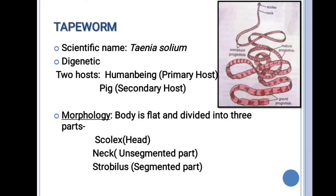The scientific name of the tapeworm is Taenia solium. This tapeworm is also known as the pork tapeworm, as it completes some stages of its life cycle in the pig. It is known as a tapeworm because its body is flat and it looks like a measuring tape.